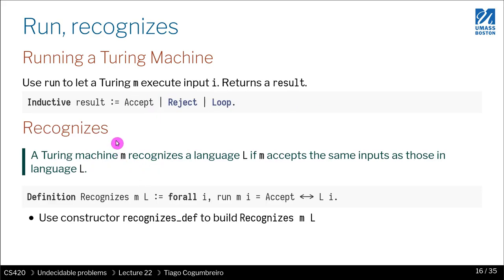So then, in the book, we have the notion of a Turing machine m recognizes a certain language, and that is, we say that a Turing machine m recognizes the language L if the Turing machine m accepts the same inputs as those in language L. So formally, recognizes takes two parameters, right? The machine and the language.